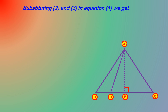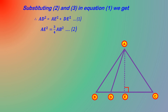Substituting equations 2 and 3 into equation 1: AD square equals AE square plus DE square. Replacing AE square with 3/4 AB square and DE square with 1/36 AB square.